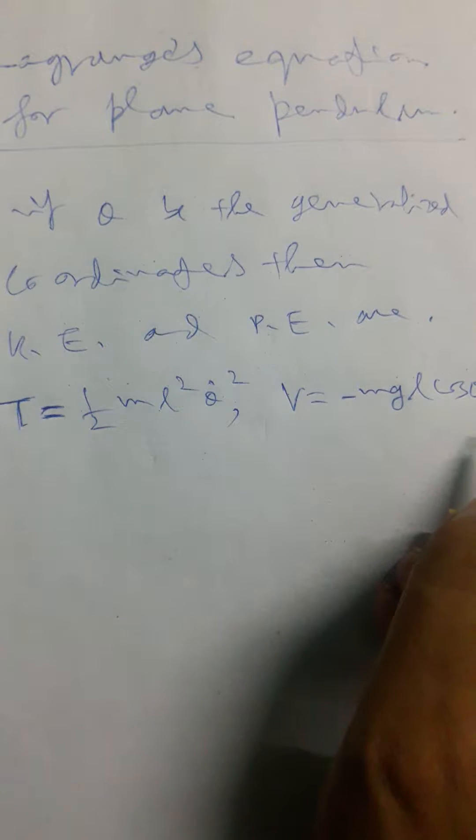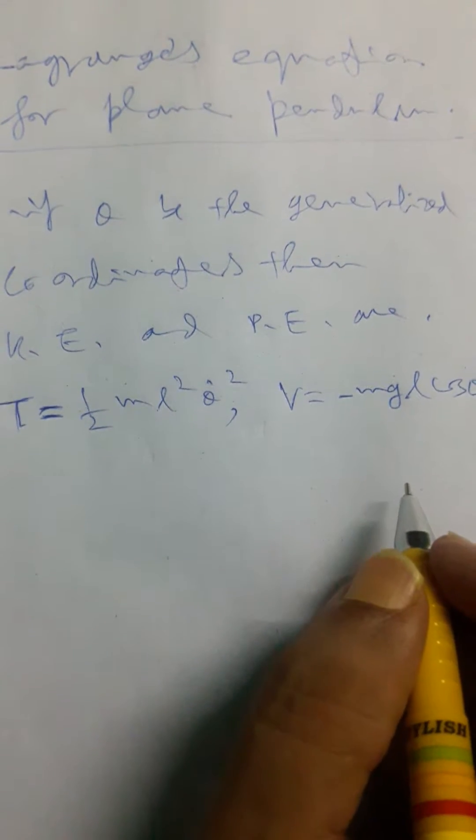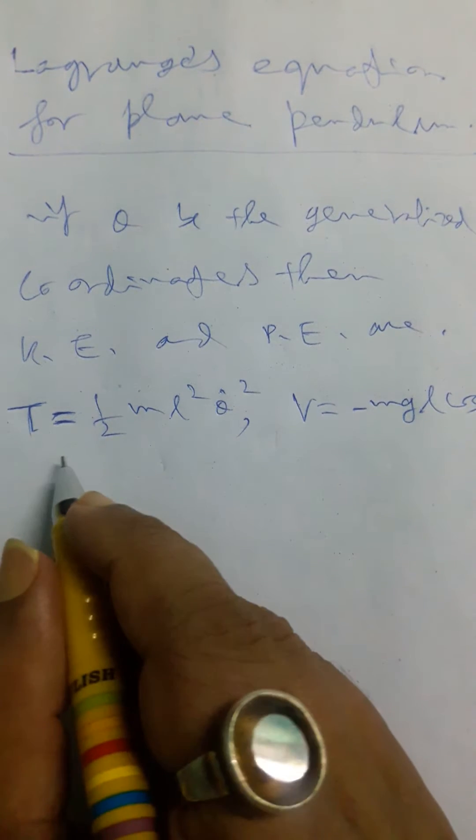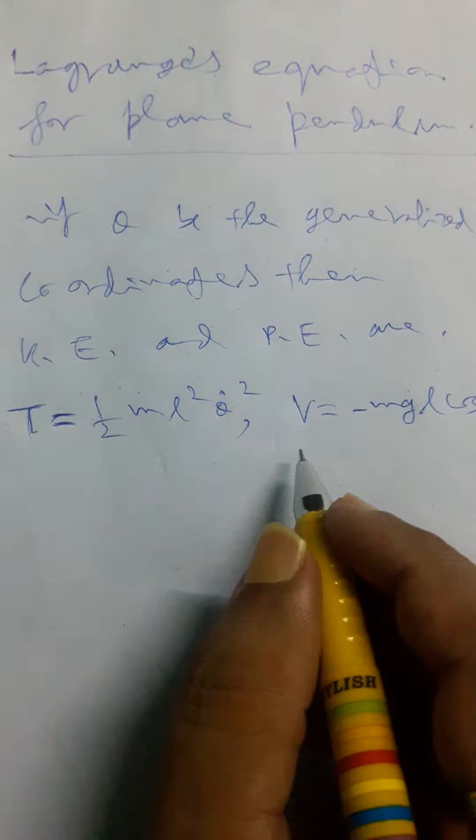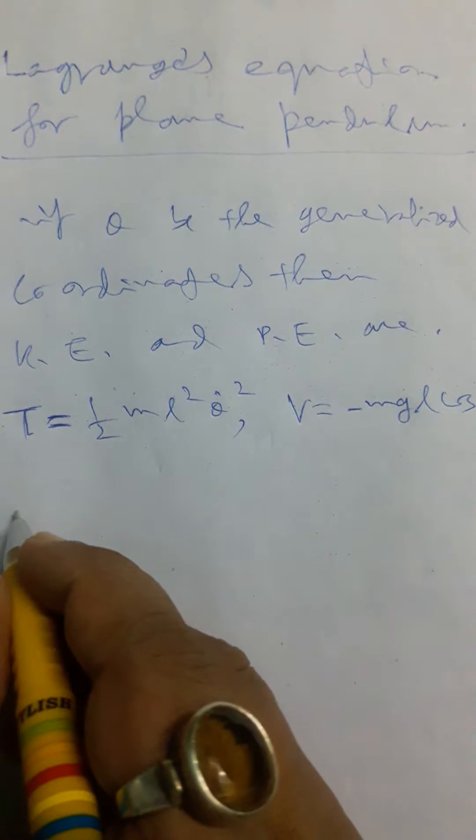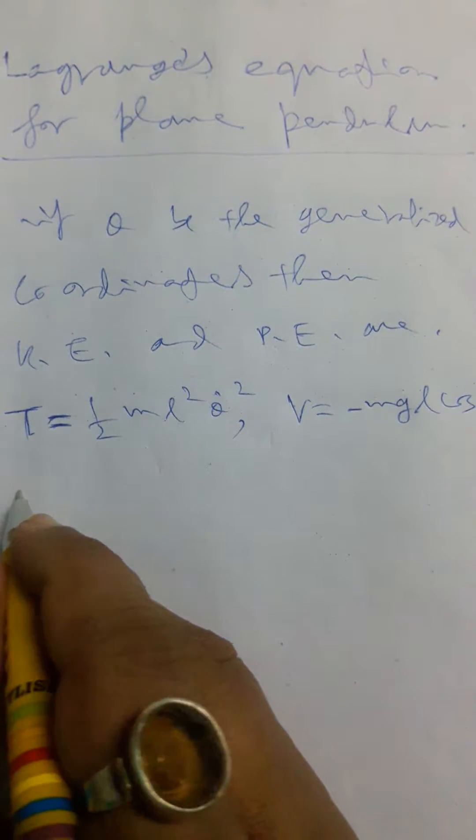Now, our main object is to set up the Lagrangian equations. So, it's obvious and clear T is the kinetic energy and V is the potential energy. Now we have to set up the Lagrangian. So as a result, the Lagrangian is...